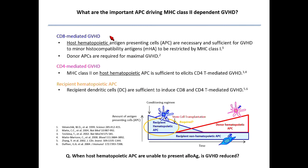For CD8-mediated GvHD, host hematopoietic APCs are necessary and sufficient for GvHD induction, and donor APCs are required for maximal GvHD. For CD4-mediated GvHD, MHC class 2 expressed on host hematopoietic APCs is sufficient to elicit CD4-mediated GvHD. Regarding host hematopoietic APCs, the recipient DC is sufficient to induce CD4 or CD8-mediated GvHD — so likely the recipient hematopoietic APCs are really important. However, for the CD4-mediated GvHD, it is not really proven which cell type is necessary.